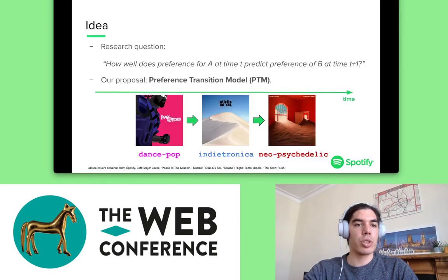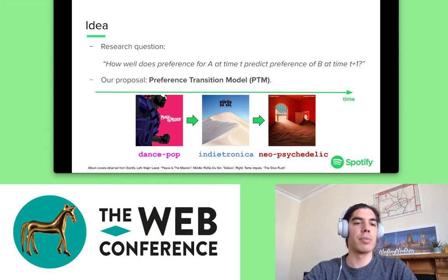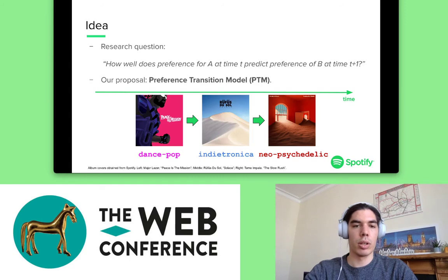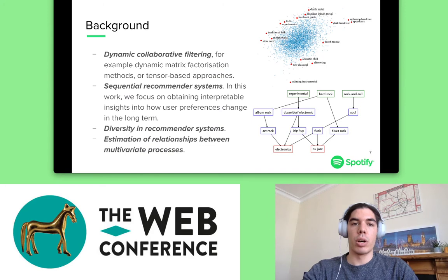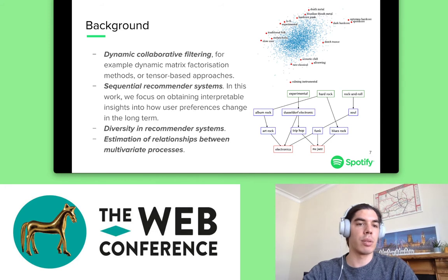The research question is simple: how well does preference for item A at time t predict preference for item B at time t+1? Our proposal, the preference transition model PTM, tries to address exactly this problem. Our work is related to many different fields. The two most relevant are dynamic collaborative filtering — for example, dynamic matrix factorization methods, tensor-based approaches — and sequential recommendation systems.